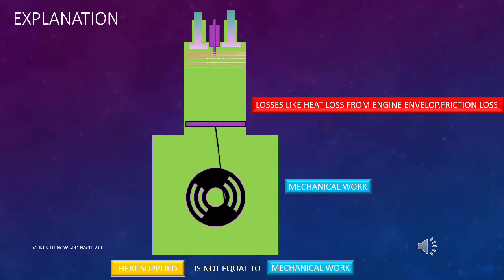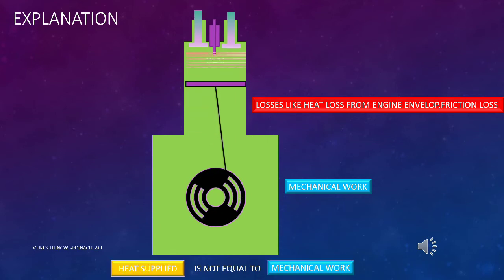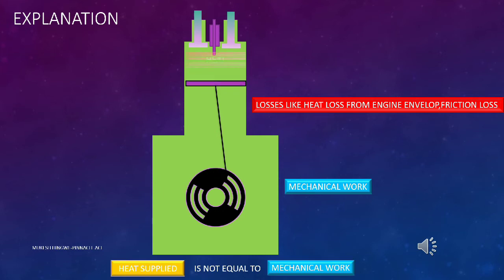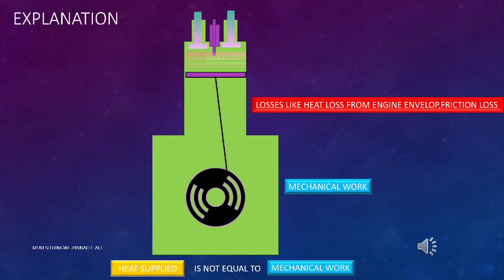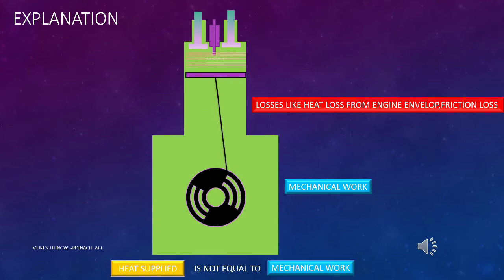Losses such as heat losses from the engine envelope, friction losses, and other efficiency losses occur in the engine. Hence, in a cyclic process there is no engine which can convert the total heat into mechanical work.